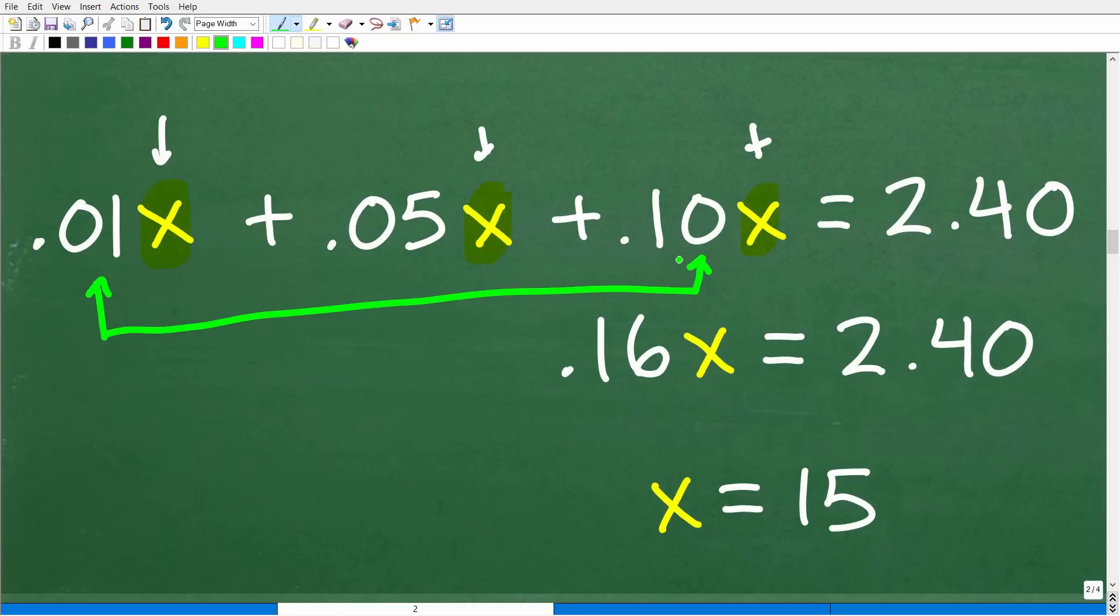So don't let these decimals bother you here. The main idea is to recognize that we are indeed dealing with like terms so I can add up these coefficients. So again, just get your calculator out. If you're not comfortable working with decimals, we got 0.01 plus 0.05 plus 0.10. When we add up all those decimals, we get 0.16 X. Okay. That's how many X's we have here. So 0.16 X is equal to 2.40. And so now to solve for X, all we have to do is divide both sides of the equation by 0.16. So 2.40 divided by 0.16 is 15.